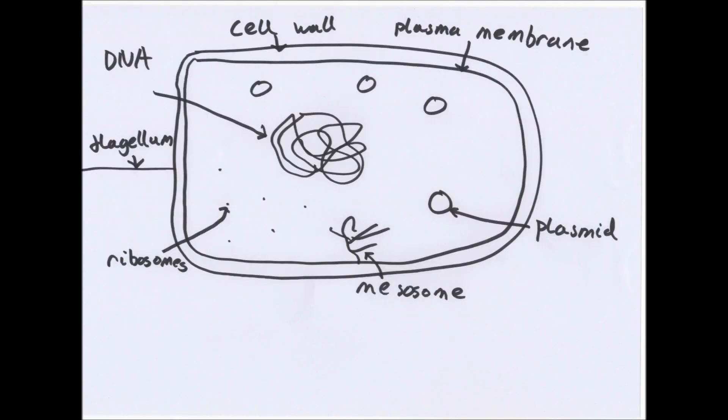And here is a bacteria. This is a prokaryote. As you can see, the DNA is kind of in loops. You have plasmids which are rings of DNA, cell wall, mesosomes, ribosomes. Actually not as much in it as the other cells.